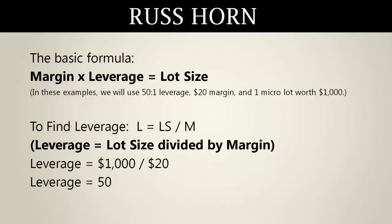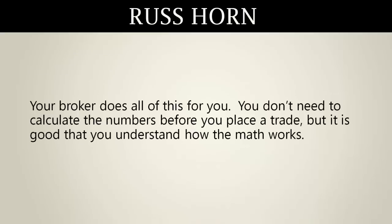Finally, in order to find leverage, we use that margin times leverage equals lot size formula and rearrange it to isolate the leverage. Leverage equals lot size divided by margin. So the leverage equals the lot size of $1,000 divided by the margin of $20. 1,000 divided by 20 gives us 50, so we know the leverage is 50 to 1. Your broker does all of this for you. You don't need to calculate the numbers before you place a trade, but it is good that you understand how the math works.